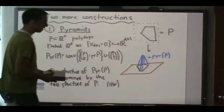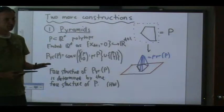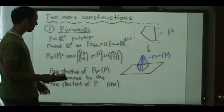The other part of the homework exercise is: if you know the f-vector of p, you can find the f-vector of the pyramid. That's what the homework asks, and in proving it you'll also prove the combinatorial type statement. Any questions about pyramids?